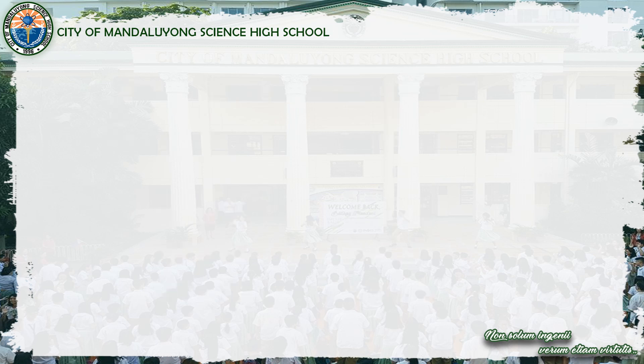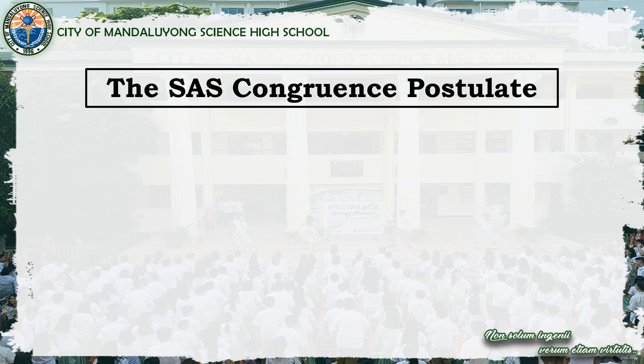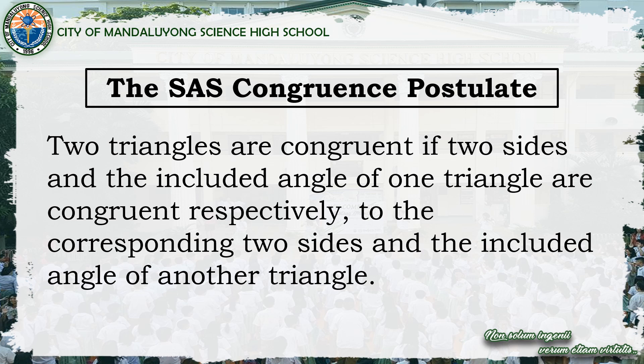Now let's move on to two triangle congruence postulates: SAS and ASA. First, the SAS congruence postulate: two triangles are congruent if two sides and the included angle of one triangle are congruent respectively to the corresponding two sides and the included angle of another triangle.